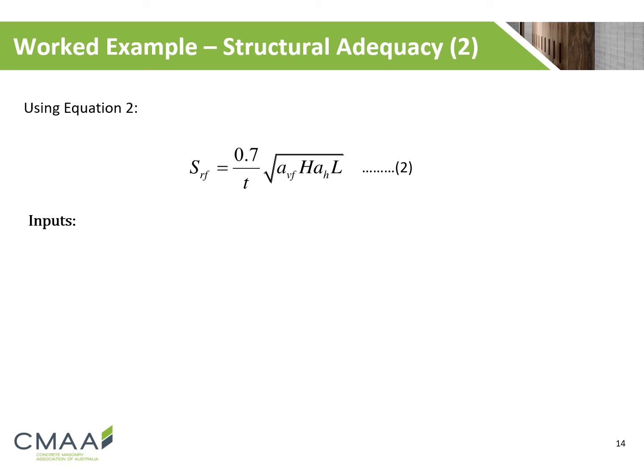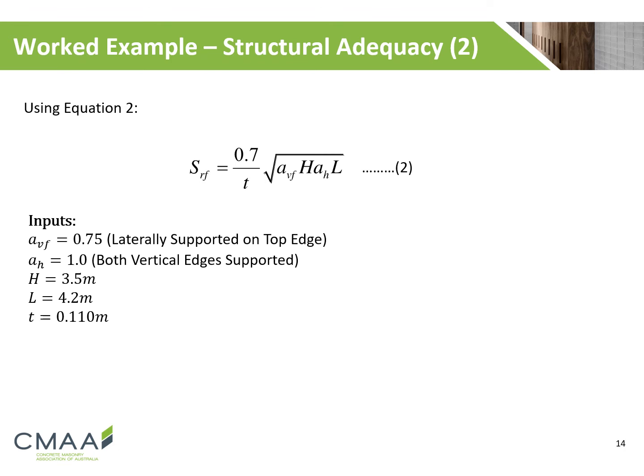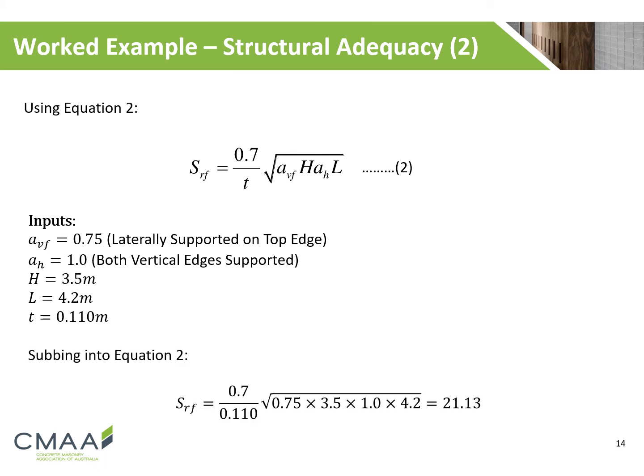Now evaluating equation 2. Again, we know that the wall is laterally supported at the top edge, hence a vertical span coefficient of 0.75 is used. Both vertical edges are supported, so a horizontal span coefficient of 1 is used. The height of the wall is 3.5m, the length is 4.2m and the thickness is 110mm. Subbing this all into equation 2, we calculate a slenderness ratio of 21.13 for this wall.